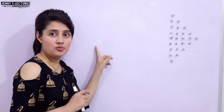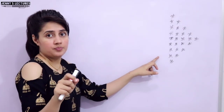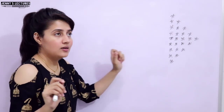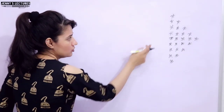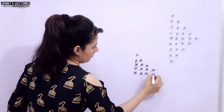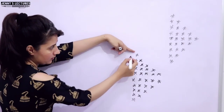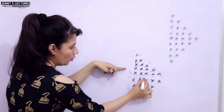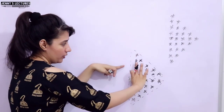We'll see the logic here first on the whiteboard, then I'll show you the output on my laptop using VS Code Editor. This is very simple to print — don't look at it and think it's very tough. If you observe, this pattern is a combination of two patterns: one is this inverted half pyramid, and the other is this half pyramid. Combining these two, we'll get this pattern.